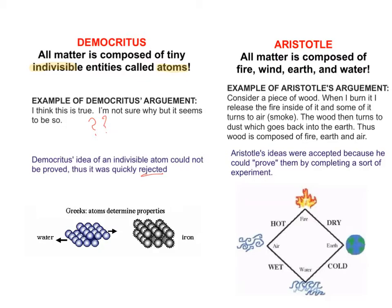About a hundred years later, Aristotle showed that all matter was composed of fire, wind, earth, and water. His idea was that if you have a piece of wood, when you burn it, it gave off fire. It had turned into air or smoke. The wood then turned into dust which turned back into the earth, and the wood was composed of the fire, the earth, and the air. He had proof of his idea. We now know that it was wrong, but he did have experimental scientific proof according to what they knew at the time.